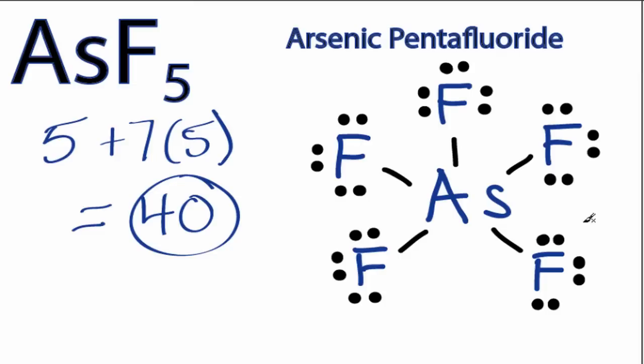So for the AsF5 Lewis structure, we've used all 40 valence electrons. The octets are fulfilled on the fluorine. The arsenic has 10 valence electrons, but that's okay. If you check the formal charges, you'll see that the formal charges are 0, so that's good.